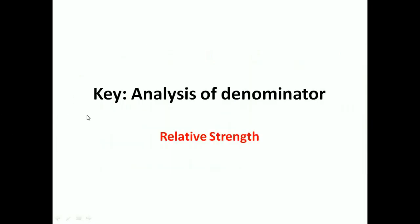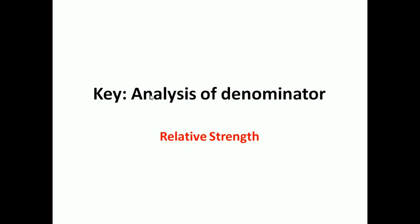Coming back to relative strength — for better RS analysis, the analysis of the denominator is a key aspect. When we are analyzing sectors, the trend of Nifty is important to keep in mind. When Nifty is in an uptrend, we should look at outperforming sectors; when Nifty is in a downtrend, we should trade underperforming sectors. When Nifty is bullish, the reward is more in trading continuation patterns of outperforming stocks. Keep in mind sectors which are underperforming — you can trade them if Nifty weakens and they continue to underperform. Same way, when Nifty is bearish, trade underperformers and keep in mind the outperformers.